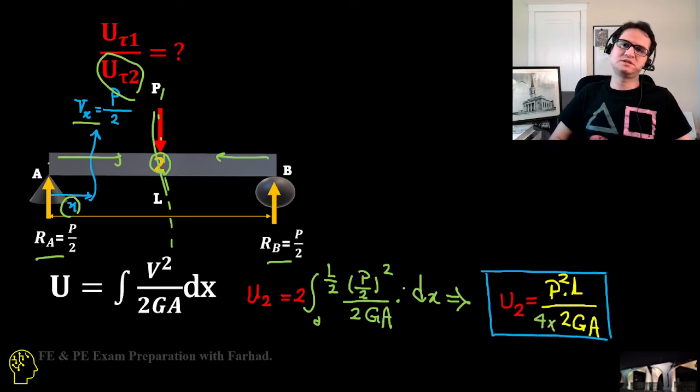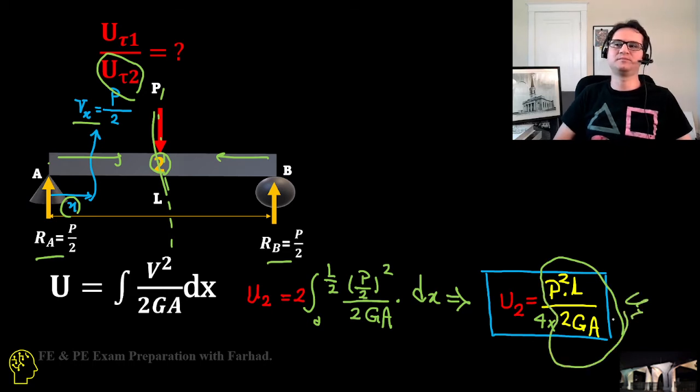These cancel out, giving P² over 4 times L/2, which equals P²L over 8GA. If you remember, U1 equals P²L over 2GA. So U2 is just one-fourth or a quarter of U1.